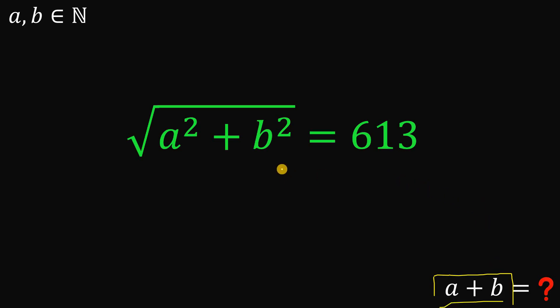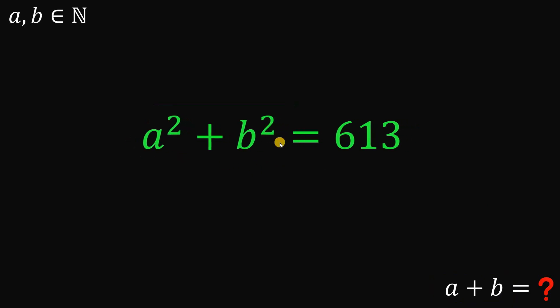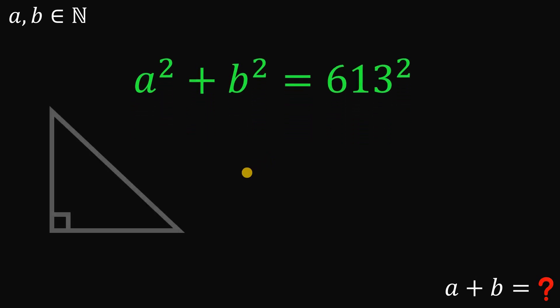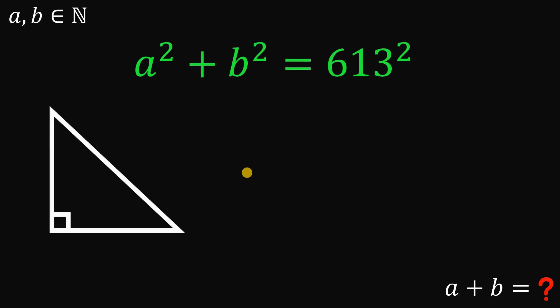Seeing this equation, if we square both sides, we have a squared plus b squared equals 613 squared. Now, this reminds me of a right triangle with side lengths a, b, and 613.